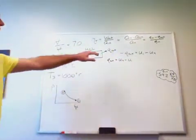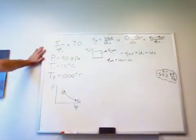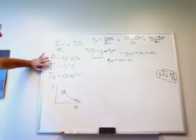Internal energy of an ideal gas depends only on the temperature. We have T1, so we have U1. We just need T4 now.